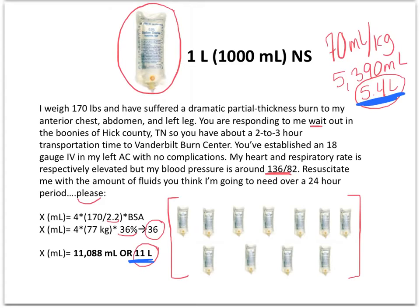Because over time I'm going to start losing all that fluid from my intravascular compartment — it's going to start leaking out and I'm going to start swelling. It's got to get back into my intravascular space somehow. That's why we give an isotonic crystalloid solution — normal saline. In 24 hours I will be getting 11 liters, because that's how much fluid they anticipate I am going to lose. It's going to go wherever it can — the path of least resistance — which is wherever there is swelling.